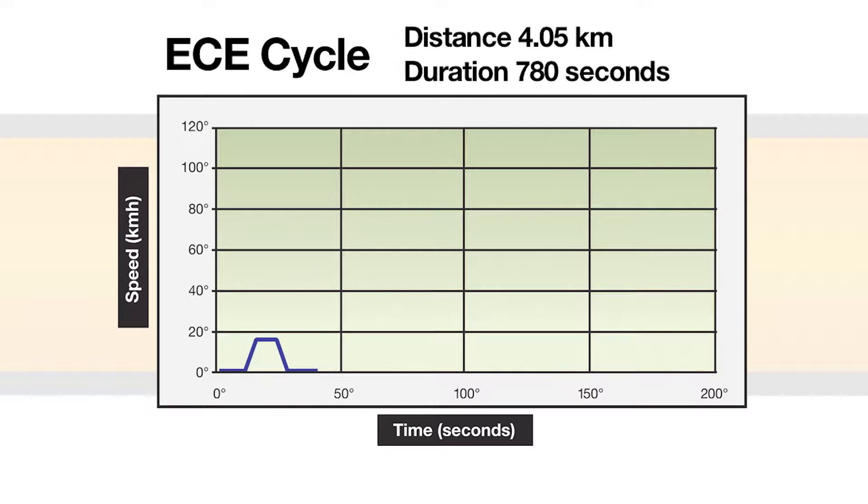The NEDC test is typically conducted using a passenger vehicle on a chassis dynamometer. The test begins with four ECE cycles that simulate city driving. The ECE cycle is characterized by low vehicle speed, engine load, and exhaust gas temperature.